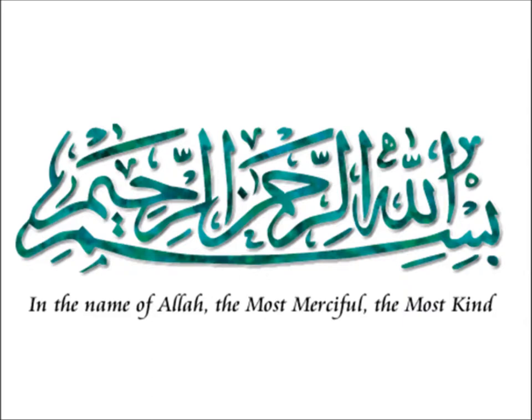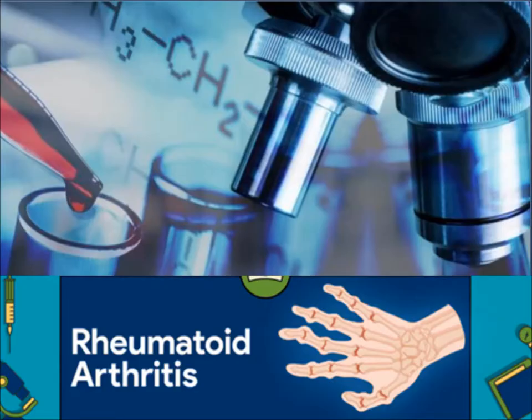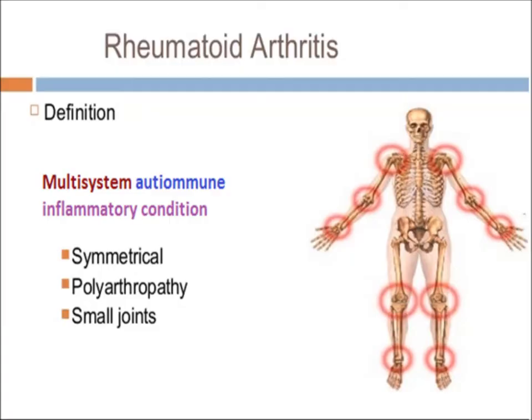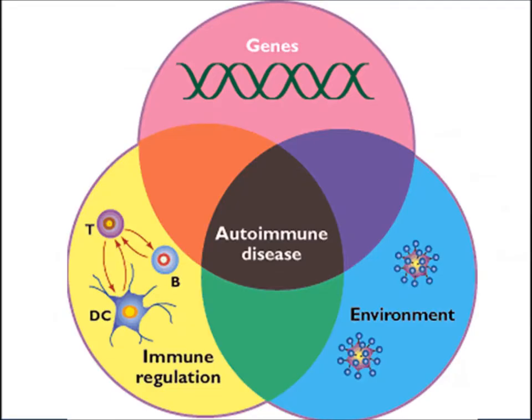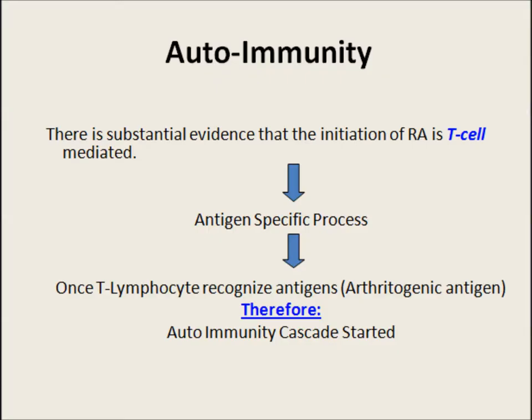Today we are going to discuss rheumatoid arthritis. Rheumatoid arthritis is a chronic inflammatory condition. It is a multi-system disease, autoimmune in nature, and it causes arthritis of small joints with symmetrical involvement. There are three contributing factors: genetics, environmental factors, and immune regulation.